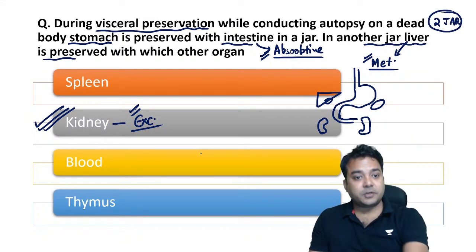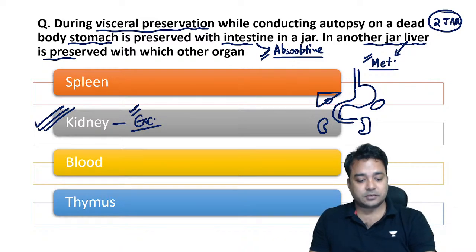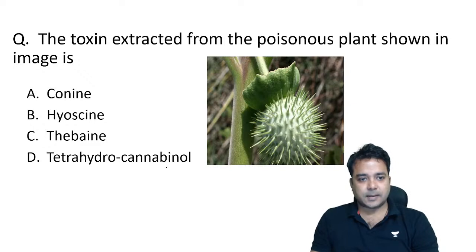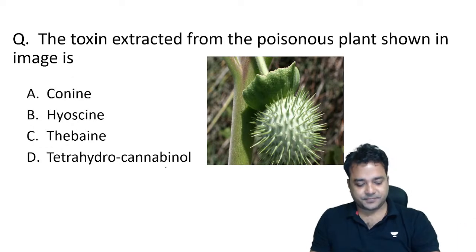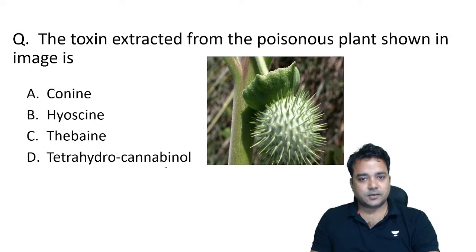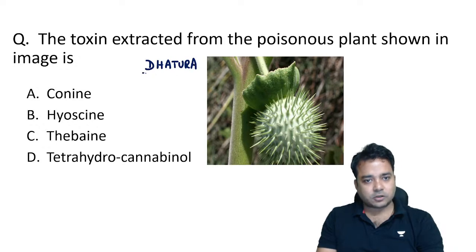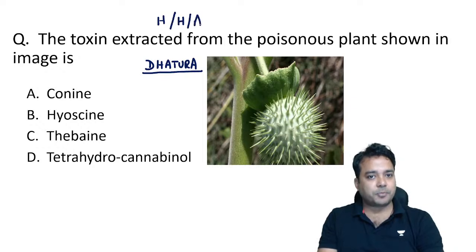This is a repeat question from FMG exams: the toxin extracted from the poisonous plant shown in the image is which of the following? This poisonous plant needs to be identified — it is our datura fruit, a single fruit with long spikes. The active principle in datura is hyoscine (hyoscine and atropine). Hyoscine goes as the answer of choice.